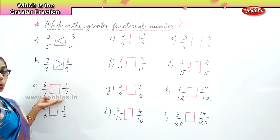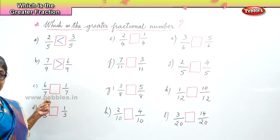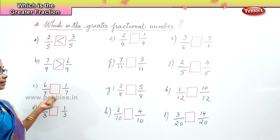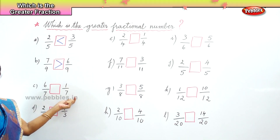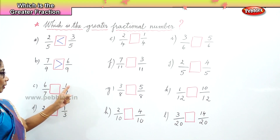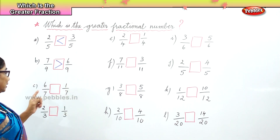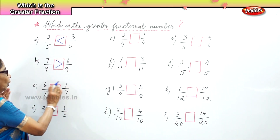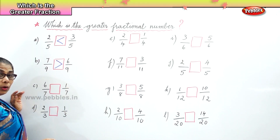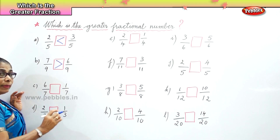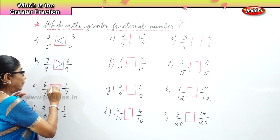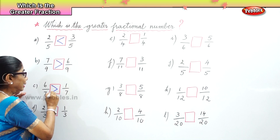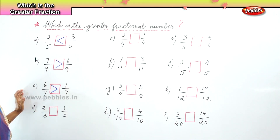In the next we have one by seven and six by seven. The denominators are the same, and the whole is divided into seven parts. In the numerator we have six and one. We know six is bigger than one. Therefore, six by seven is greater than one by seven.